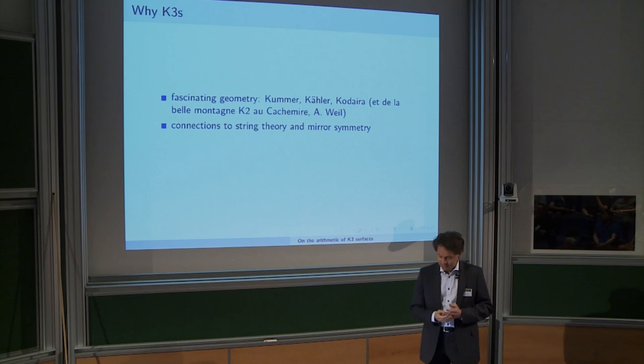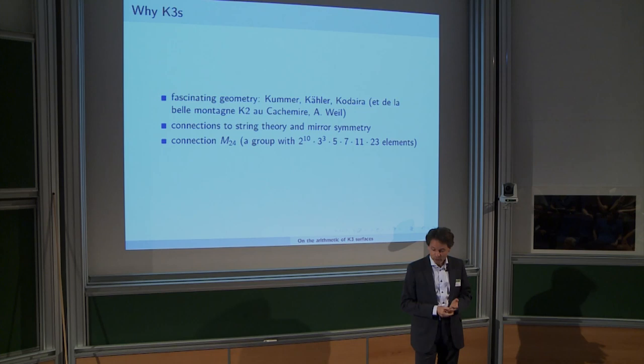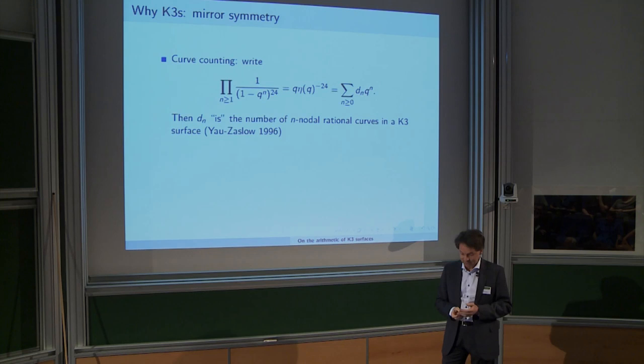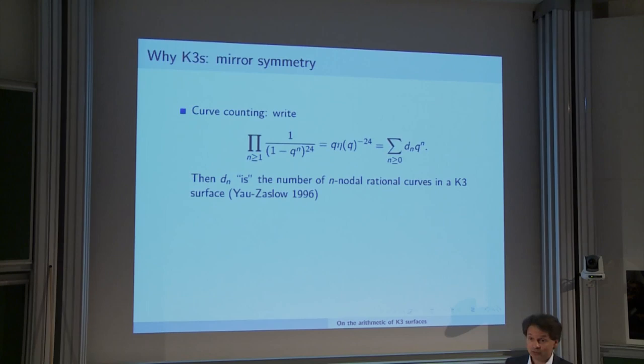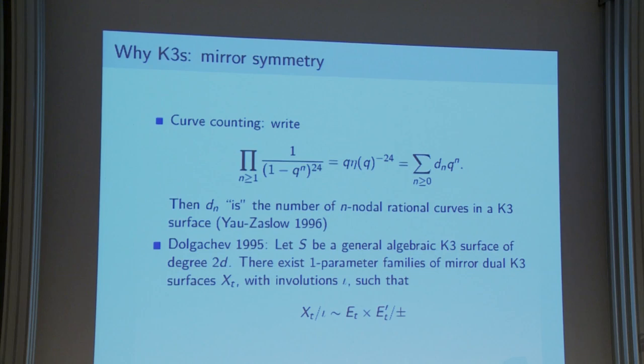There are connections to interesting groups, monster groups. Just to warm up: curve counting came up in mirror symmetry. It's quite fascinating to write down some generating function with rapidly growing coefficients. This is supposed to count rational curves on a K3 surface. The famous formula by Yau-Zaslow was established over the years, and that curve count is supposed to be connected with something in the mirror world.